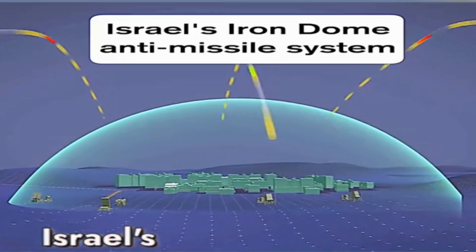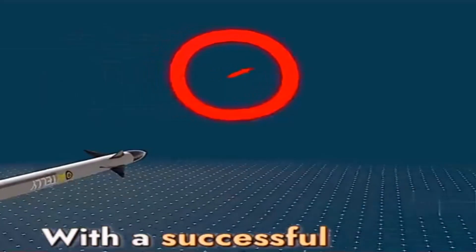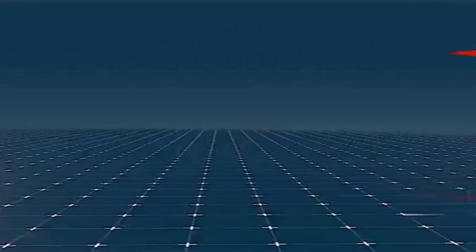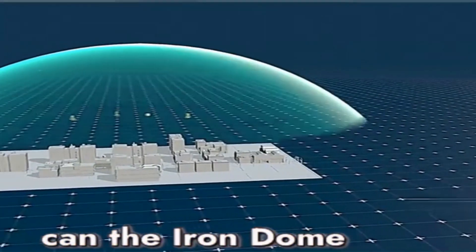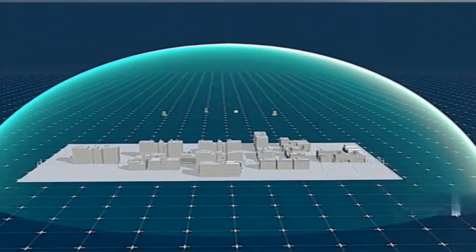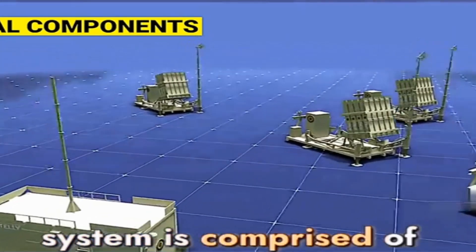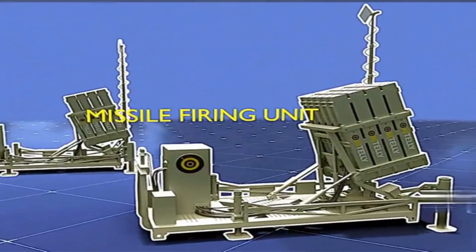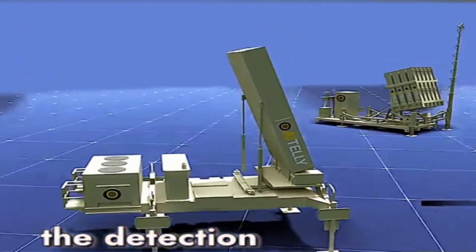Israel's Iron Dome anti-missile system has been making headlines lately. With a successful interception rate of 90% for each missile, it's impressive. But with Hamas launching 5,000 rockets in just 20 minutes, can the Iron Dome really defend against such a saturation attack? The Iron Dome air defense system is comprised of three key components: the battle command center, the missile launcher, and the most crucial part, the detection and tracking radar.